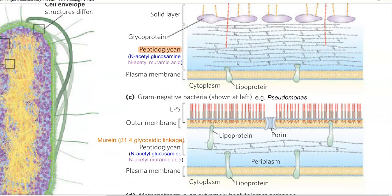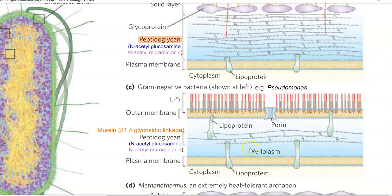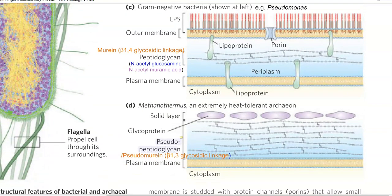In gram negative bacteria, the same monomeric units make up the peptidoglycan. The structural arrangement of peptidoglycan between gram positive and gram negative bacteria is not much different — only the thickness differs, with gram positive being thicker. Both share the same monomeric subunits and both are linked by the same beta-1,4 glycosidic linkage. Now we come to the third group, Archaea.